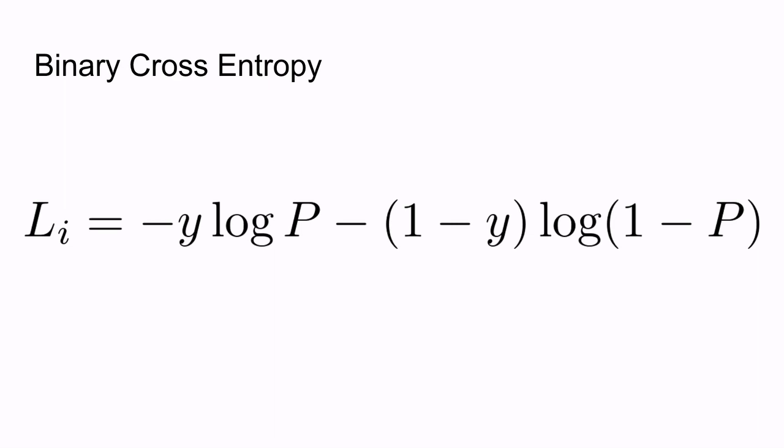So y log p, 1 minus y log 1 minus p. It's based on cross entropy between two probabilities. A large cross entropy indicates divergence, and a small cross entropy indicates similarity. This method converges much faster than mean square error, and its derivative has favorable properties, such as being easier to compute and use with non-linear activations.